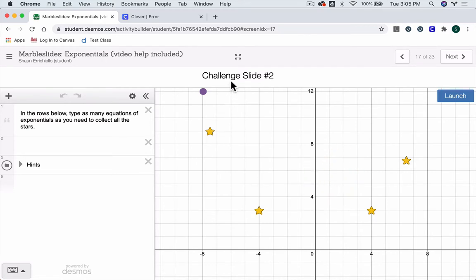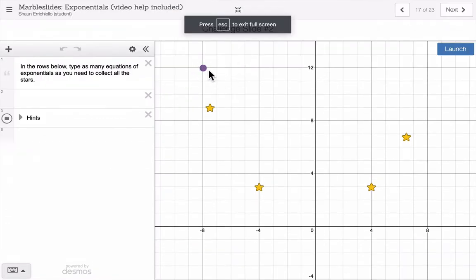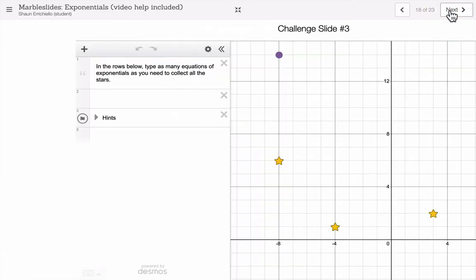A workaround is to click this Enter Full Screen button right here. If you click this, you should be able to see the marble on all of the marble slide graphs. It should work for each of the challenges.